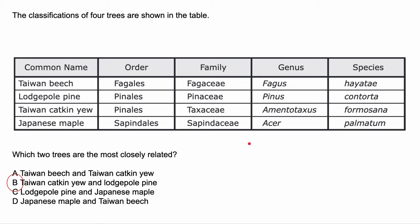Let's do one more practice. Which one is going to be the least specific or the most general — order, family, genus, or species? Remember, order is always more general than family, and family is more general than species. Species is the least general and most specific. So the most general is order and the most specific is species.